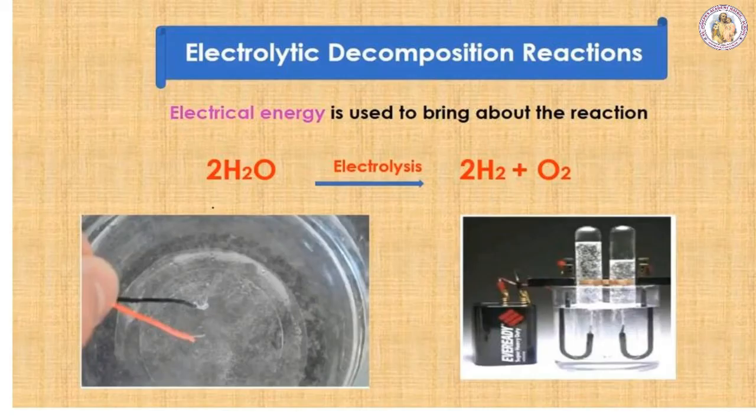In electrolytic decomposition reaction, electric energy is used to bring about the breakdown of the compound. For example, decomposition of sodium chloride occurs by passing electric current through its aqueous solution. Sodium chloride is decomposed into metallic sodium and chlorine — this process is called electrolysis. Another example: H2O on electrolysis gives H2 + O2. NaCl is converted from a compound into its elements — this is an electrolytic decomposition reaction.